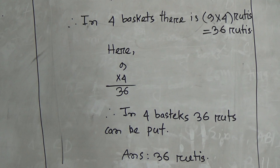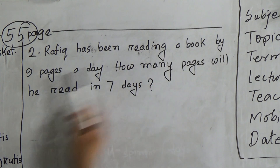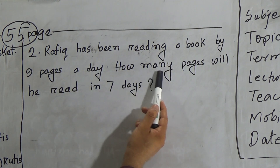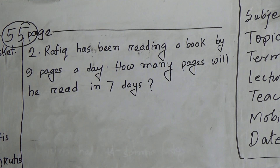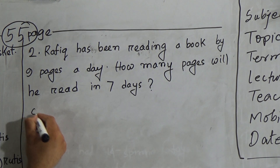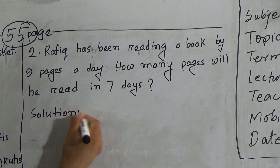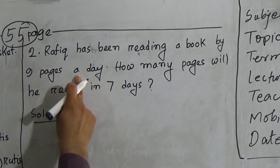Hope you understood that one. Now go to the next question. Question number two: Rufik has been reading a book by nine pages a day. How many pages will he read in seven days? Here, Rufik has been reading a book by nine pages a day.